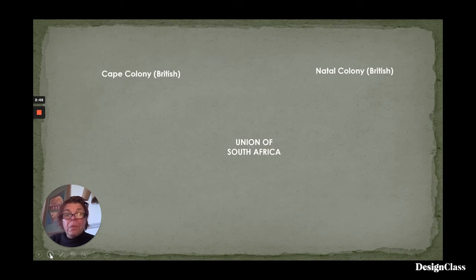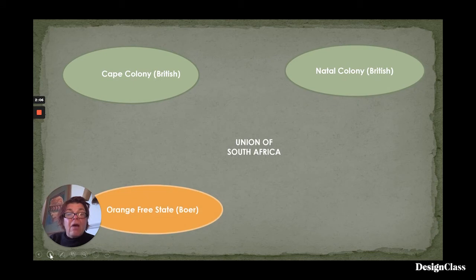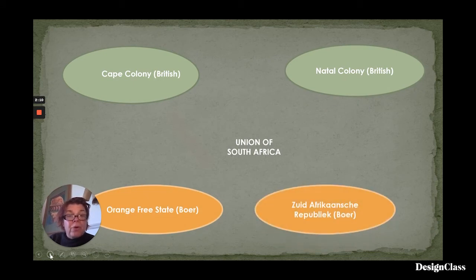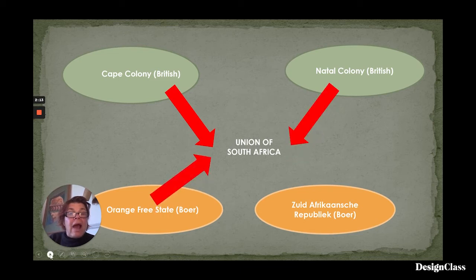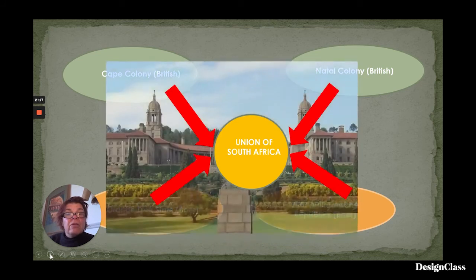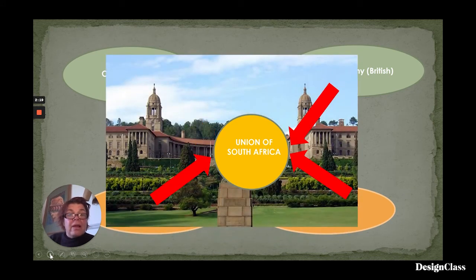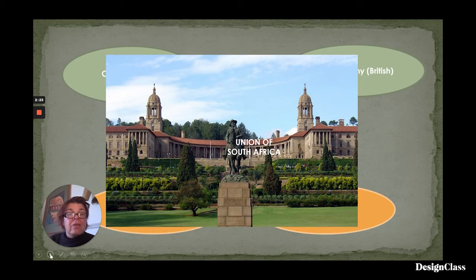This meant that the British colony — Natal colony — the Orange Free State, which was Boer, and the South African Republic, which was also Boer, all entered into Union. And in order to celebrate this, a brand new building was constructed, opened in 1911.